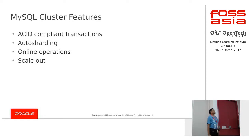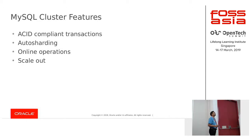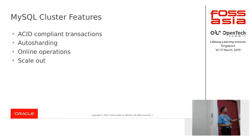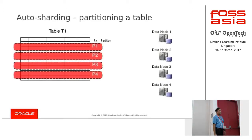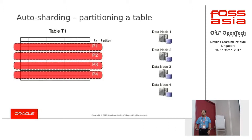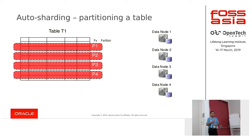Let's look at a few cluster features. MySQL cluster supports ACID compliance like any RDBMS — ACID-compliant transactions, auto-sharding, online operations, and scale-out. Auto-sharding is built-in: users don't have to worry about where data is stored, which partition, or which type. When you create a table with four data nodes, the partition is created automatically — partition P1, P2, P3, P4 — and each partition stores its data in one of the data nodes.